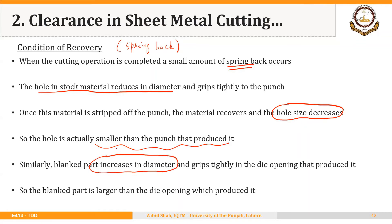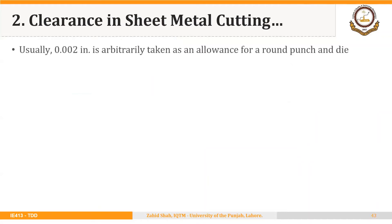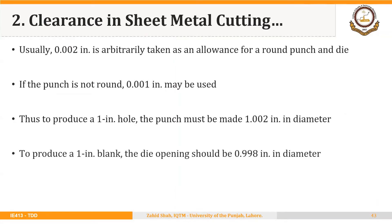The hole is actually smaller than the punch that produced it. Similarly, the blank part increases in size and grips tightly in the die opening. The blank is larger than the die opening which produced it. So we must make holes slightly larger and blanks slightly smaller. As a rule of thumb, 0.002 inches is taken as allowance for a round punch and die, and 0.001 inches if the punch is not round. Thus, to produce a one-inch hole, the punch should be 1.002 inches in diameter.